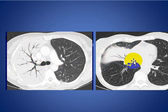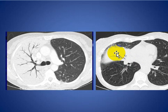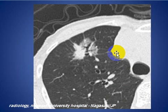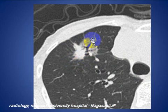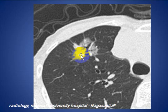CT scan shows air bronchogram with airless lung in the right upper lobe, and here it is involving the middle lobe in a patient with pneumonia. This patient has adenocarcinoma — you can see a mass lesion with some spiculations and air bronchogram in its center.